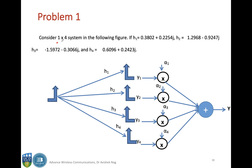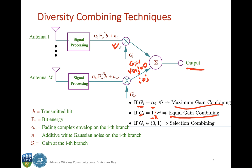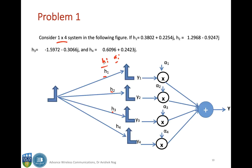Let us consider a 1-by-4 system as shown in the figure. The complex fading envelopes H_1, H_2, H_3, and H_4 are all given. The received signals Y_1, Y_2, Y_3, Y_4 are multiplied by gains alpha_1, alpha_2, alpha_3, alpha_4 respectively, then combined to give the output capital Y. Note that here the alpha_i's are the gains and H_i's are the fading envelopes, which is a slightly different notation from the previous slide.